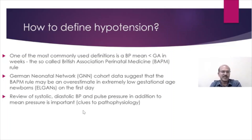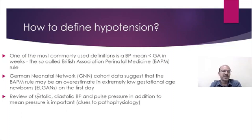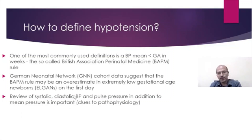The review of systolic, diastolic, and pulse pressure in relation to the mean pressure is important, as it will give us clues to the pathophysiology. You can't look at one number alone. You may have a normal mean pressure but a very low systolic, which usually indicates a contractility problem. A wide pulse pressure with a low diastolic pressure can give a clue to the etiology and guide the approach to management.